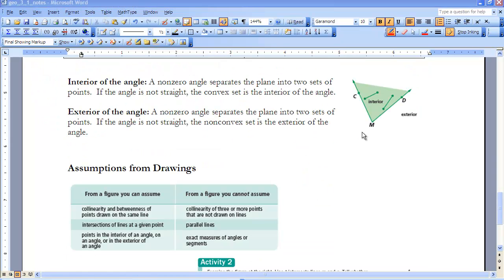We just want to make sure that we're on the same page when we talk about the interior and the exterior of the angle. When we talk about our rays being the sides of our angle, if we separate the plane into two sets of points, if the angle is not straight, the convex set is the interior of the angle. So if we separate this here, this convex set inside would be our interior, and everything not a part of that would be considered our exterior.